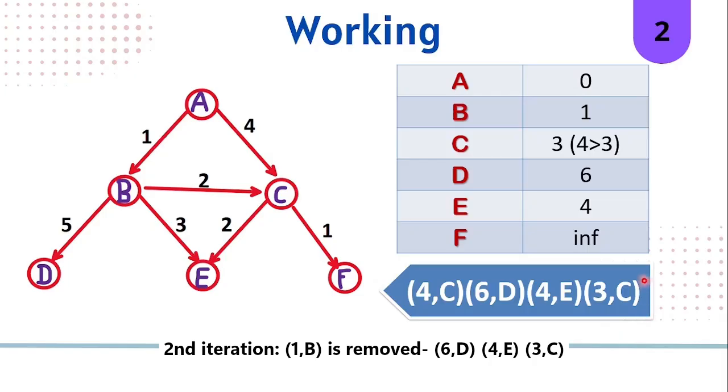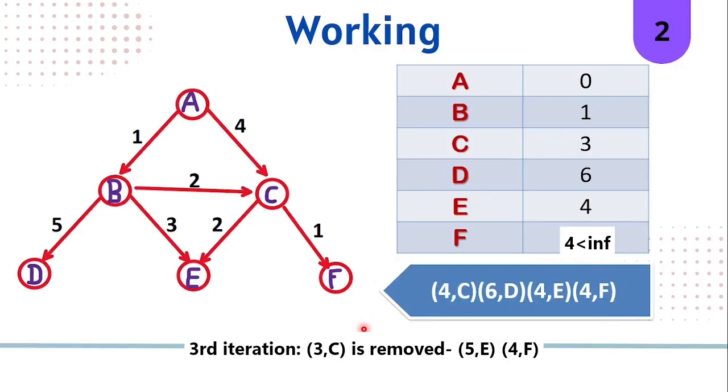As you can see in the priority queue, 3C is now the lowest. In the next iteration, we'll be taking out 3C. After taking out 3C, we'll get 5E and 4F.